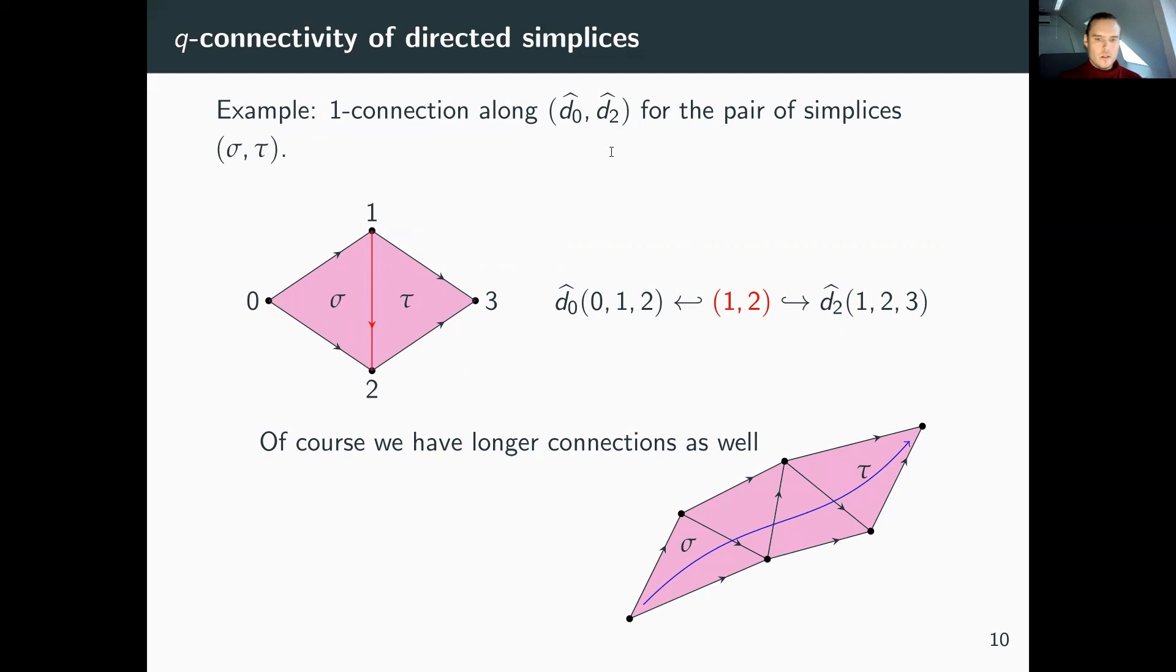We can have longer connections as well. Imagine that in our directed flag complex, we have simplices in a sequence in compatible directions for our specified face maps. We can have these higher dimensional paths of simplices, as I visualized here.